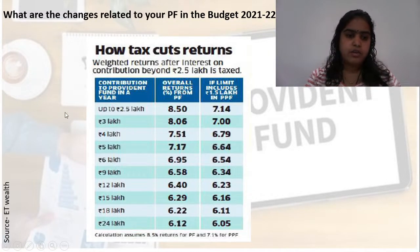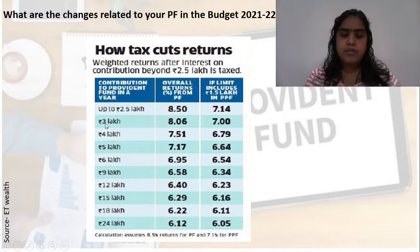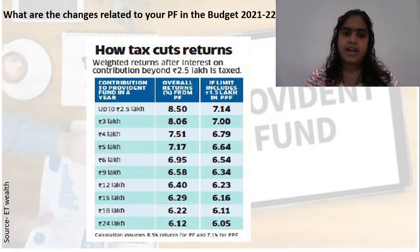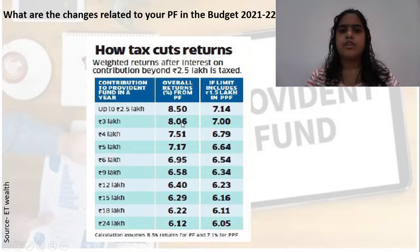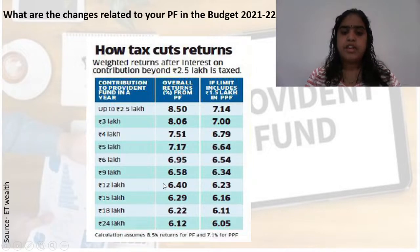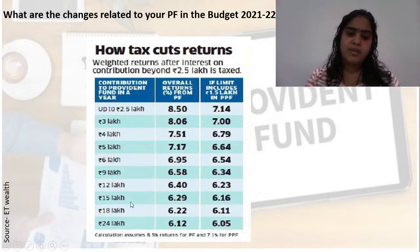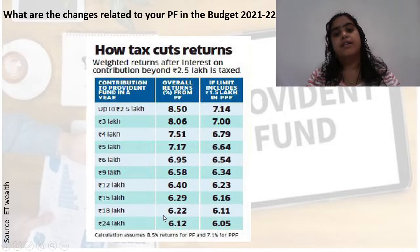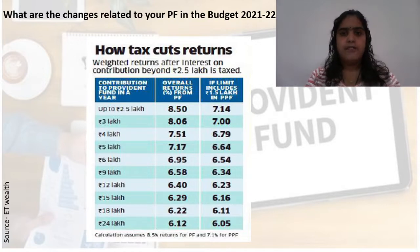This chart shows the effective interest rate at different contribution levels. Up to 2.5 lakh per year, you get the full 8.5% PF interest. If you contribute 3 lakh rupees (50,000 extra) and you are in the 30% tax bracket, you will only get an effective 5.95% on the extra amount. The blended average comes to about 8.06%. If you are contributing 12 lakh rupees a year, your effective interest rate drops to just 6.4%. So the more you put in above the threshold, the less effective return you get — the government benefits by paying out less in interest.